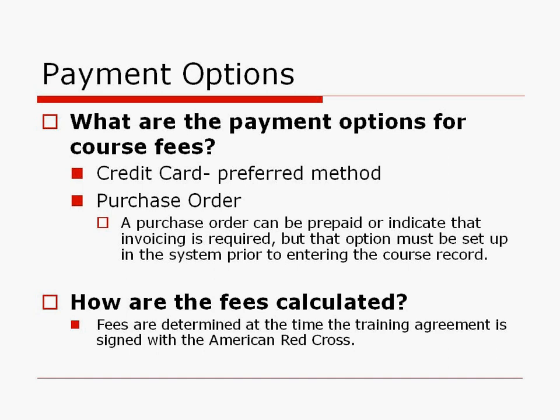You have to have that purchase order set up ahead of time if you wish to be invoiced. Fees are calculated at the time of your renewal. If you are a brand new authorized provider, contact customer service and they will connect you with the person who will get you your renewal form. All that information can be found at chicagoredcross.org/AP. You can click on the renewal form, enter your information, and someone will contact you to discuss the fee options.